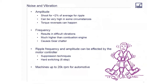Ripple frequency and amplitude can also be affected by the motor controller. There are definitely suppression techniques that can be used to make that ripple amplitude smaller. But if you go into something like hard switching or a six-step mode, you might actually increase the amplitude and frequency of that torque ripple. So you have to be aware of your operating point as well.